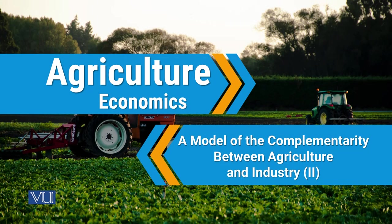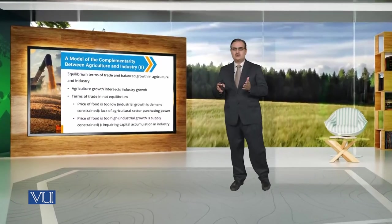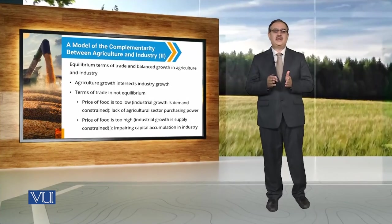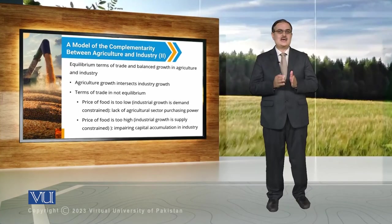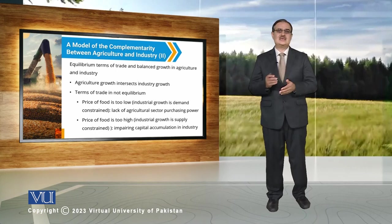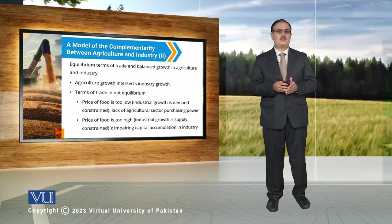A model of complementarity between agriculture and industry. When we talk about equilibrium terms of trade and balanced growth in agriculture and industry, we can observe this equilibrium terms of trade and balanced growth in agriculture at a point where the agricultural growth curve intersects the industrial growth curve.